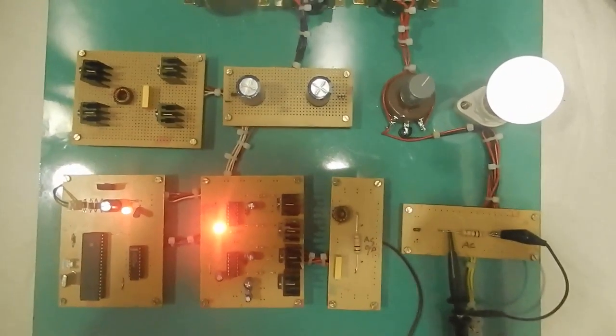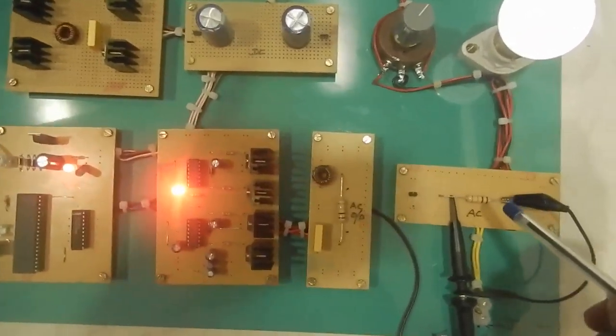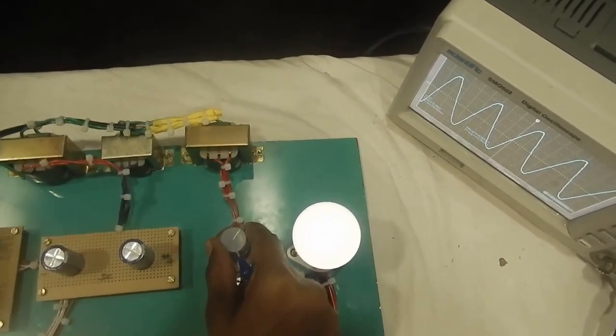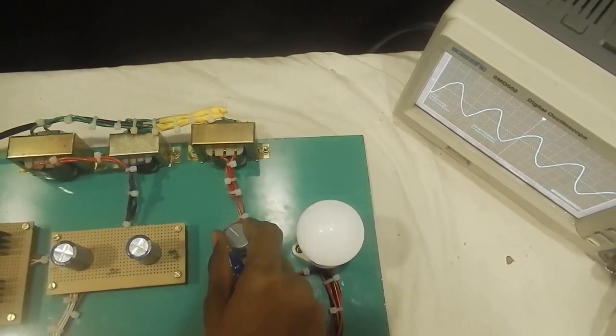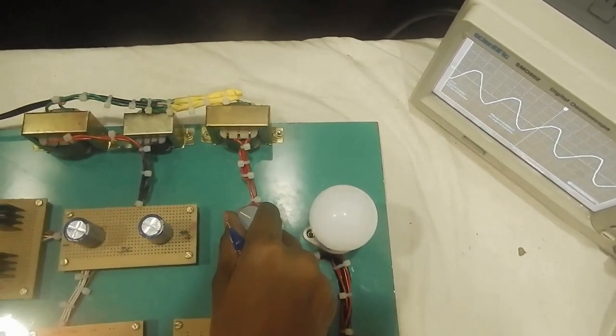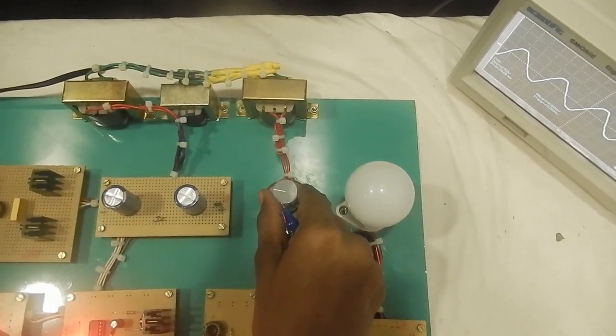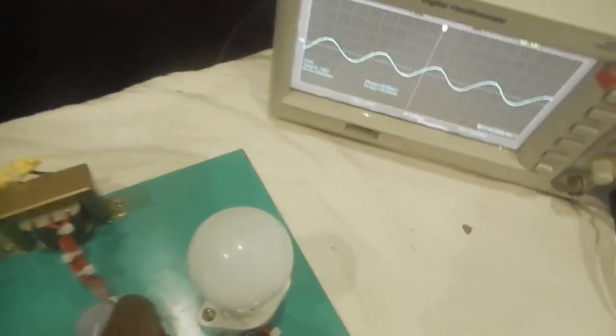Initially when the AC output is measured across this point, it will be shown in the DSO. While varying the potentiometer, the LED will stop glowing. This indicates the voltage is dropping, and it's also shown in the DSO.